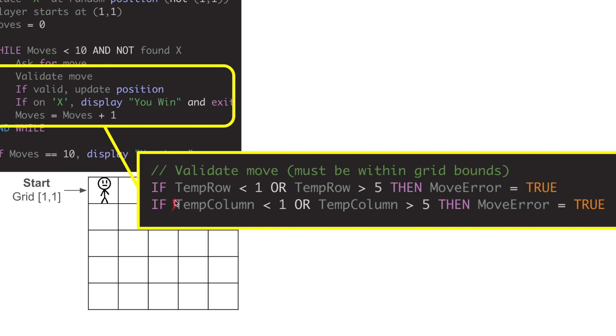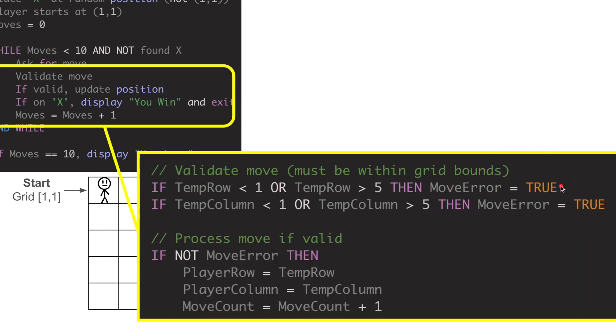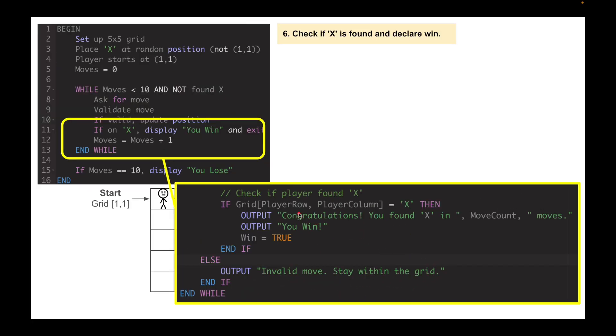So we've got to validate these moves. Must be within the grid boundaries. If temp row is less than 1 or temp row is greater than 5, then there's obviously going to be a move error. And same with the column. If it's less than 1 or greater than 5, then there's a move error. That becomes true. So if not a move error, so process move if it's valid. If not a move error, then the player row equals the temp row that we set up. The player column equals the temp column. And then the move count equals the move count plus 1, which when we're here, as you remember, is set to 0. But then it gets set to one additional move.